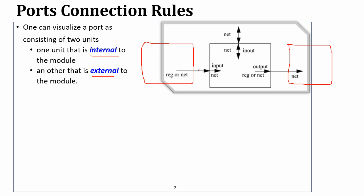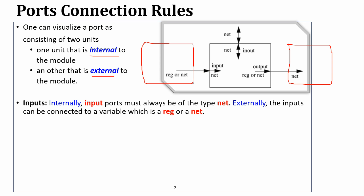So we can design the modules and see how we connect them with the ports. First of all, we have two types of data: one is the net type and one is the register type. Net is normally the wire type. If we look at this module and reference, we will look at the connections and establish the modules. The input port is the net type.